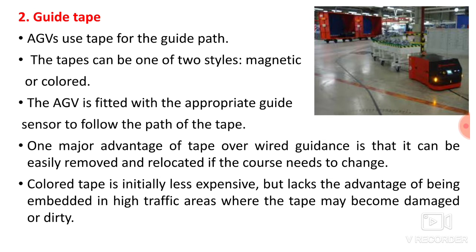One major advantage of tape over wired guidance is that it can be easily removed and relocated if the course needs to change. Colored tape is initially less expensive, but lacks the advantage of being embedded, so in high-traffic areas the tape may become damaged or dirty. If it gets damaged, the AGV will not work properly — that is the disadvantage of guide tape.